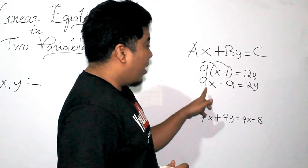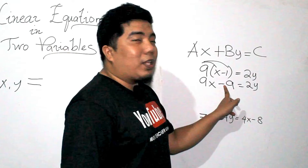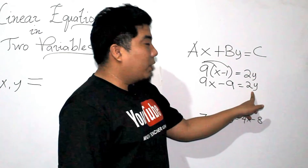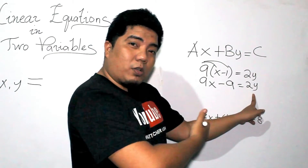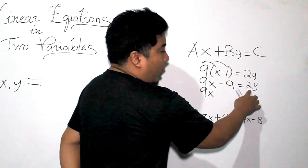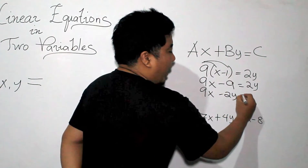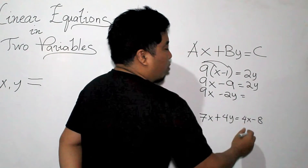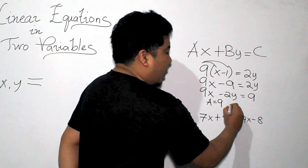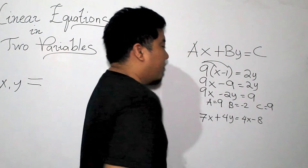However, this is not yet in the standard form. Our 9x is already in place. So we transpose the negative 9 to the other side and transpose the 2y term to the left side of the equation. That gives us 9x minus 2y is equal to positive 9. Therefore, our value for a is positive 9, our value for b is negative 2, and our value of c is positive 9.